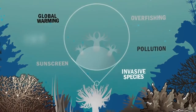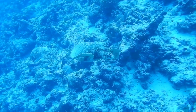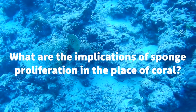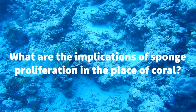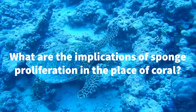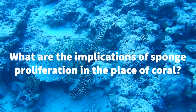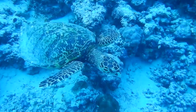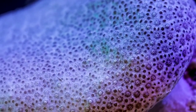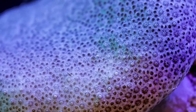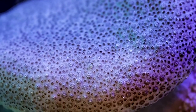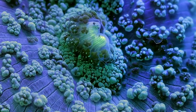In their place, sponges are becoming the new foundation for these changing ecosystems. A study done on the Indo-Pacific reef system claims that reductions in environmental quality may favor sponge-dominated reefs, but that these reefs will likely be low-diversity systems, as they do not promote biodiversity in the same way coral does.